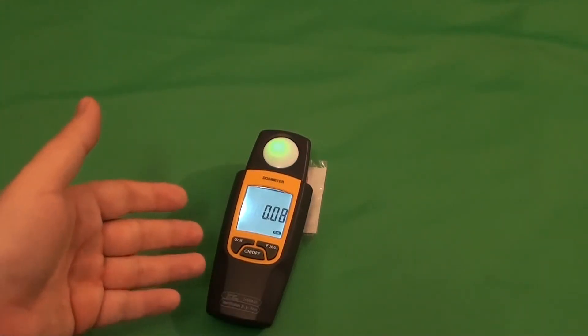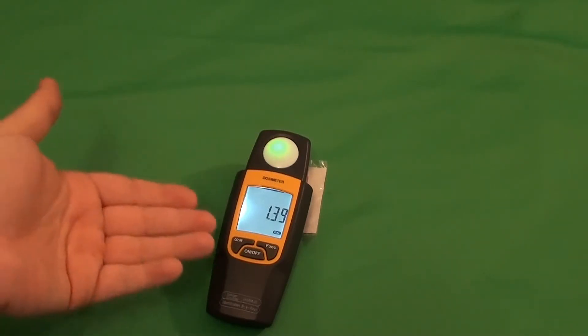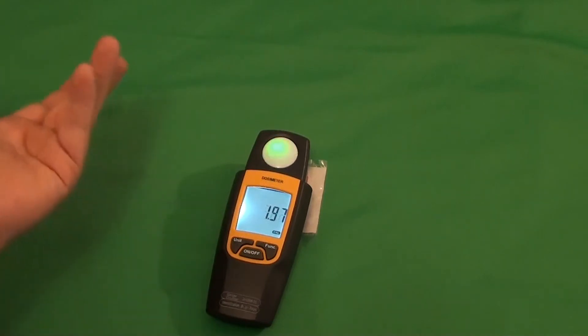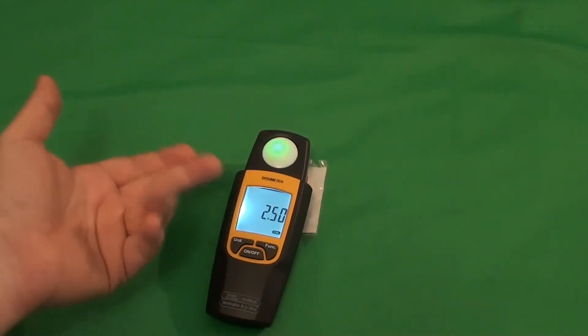For some reason, when it reaches some amount of radiation, the clicker stops clicking. I don't know if that's a bug of this unit or it's an intended feature. So you can see it's about 3 microsievert per hour.